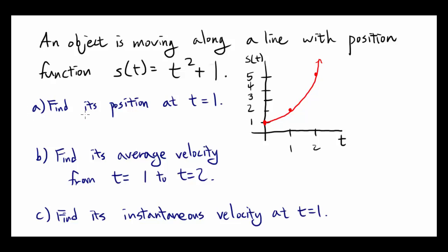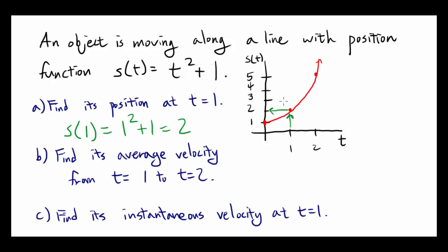Part A: find the position at t equals 1. We know this is a position function, so to find the position at time equals 1, you're just going to plug 1 into this function, which gives you 1 squared plus 1, or 2. And as you can see on the graph, when time is 1, you have a position of 2.